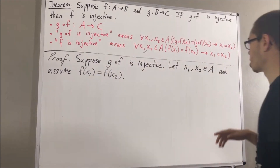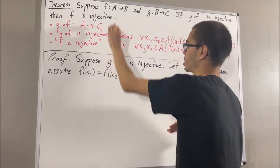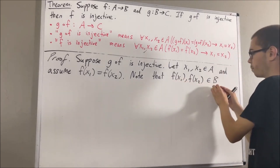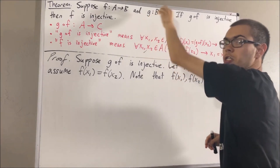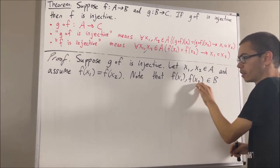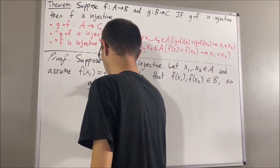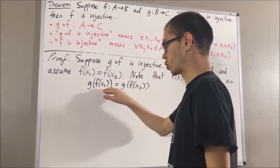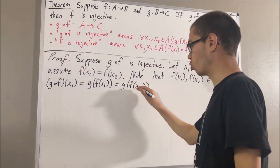The whole goal from here is to show that x1 equals x2. Now we know that f of x1 and f of x2 are output values of the function f, so they must be elements of B. And since they're elements of B, this means that they are elements of the domain of the function g. So we can send them into the function g. Their respective output values are g of f of x1 and g of f of x2. And since these two are equal, we have that g of f of x1 equals g of f of x2. One of the properties of composition of functions is that g of f of x1 equals g compose f of x1, and g of f of x2 equals g compose f of x2.